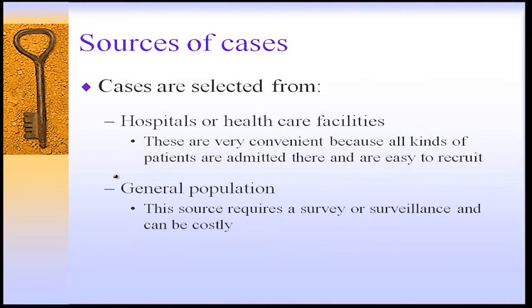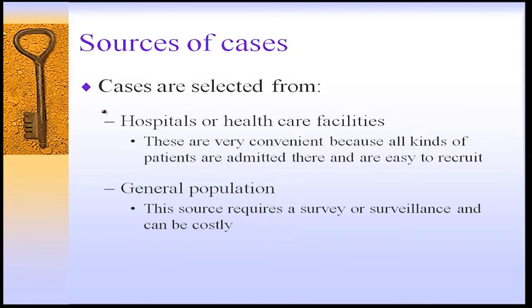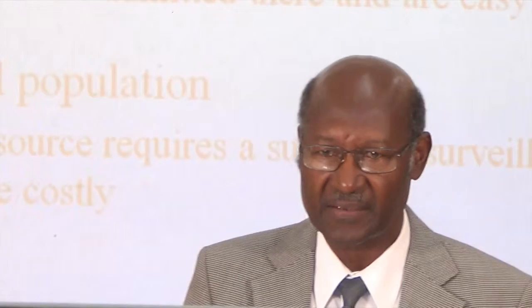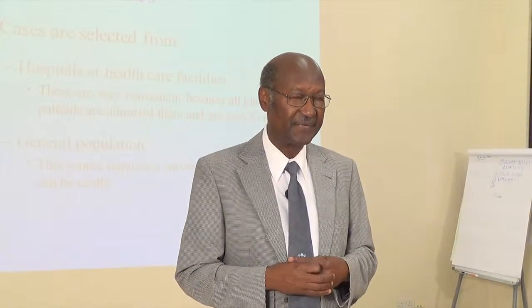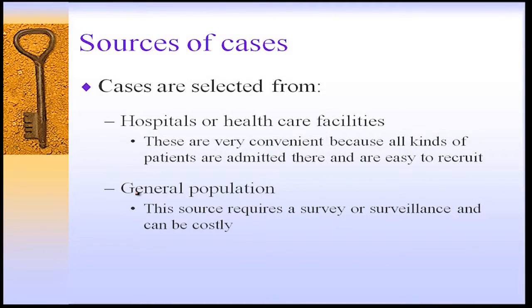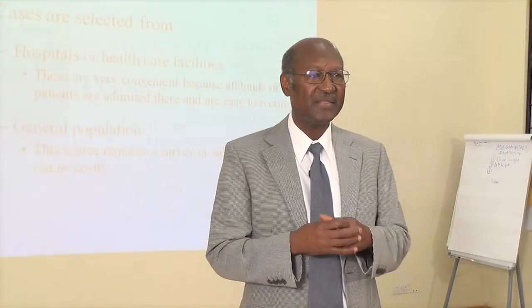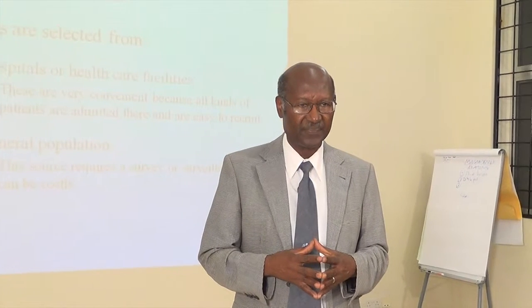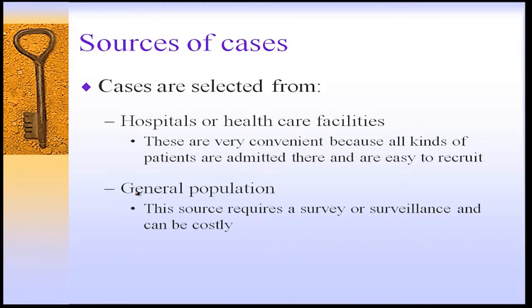Sources of cases — where do we get cases from? Cases are selected from either hospitals or the general population. Hospitals may be represented by health facilities of various sizes and are very convenient sources of cases because all kinds of patients are admitted there and are easy to recruit. In the general population, this source requires a survey or surveillance to get cases, but this can be a bit costly.